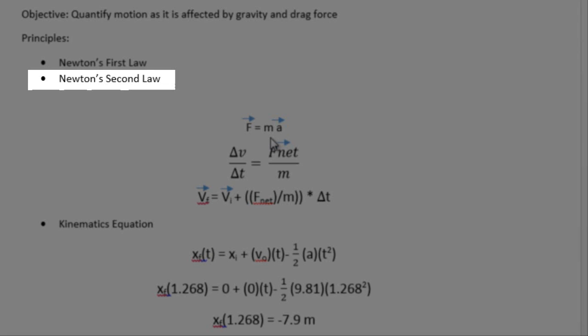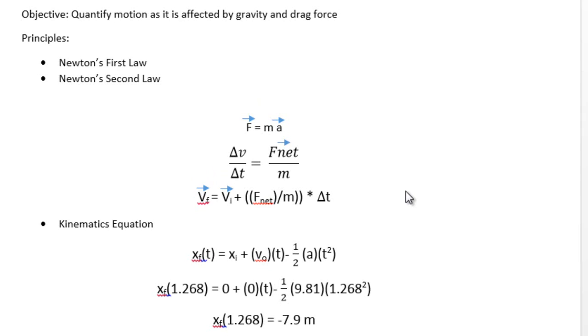Taking that further, we have Newton's second law, which is force equals mass times acceleration. Deriving that, we get velocity final equals velocity initial plus F_net divided by mass times delta t.